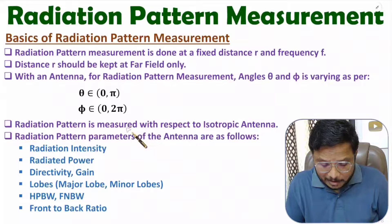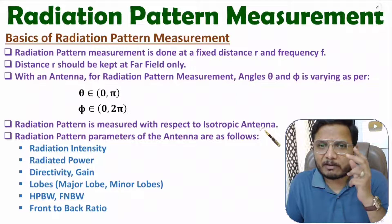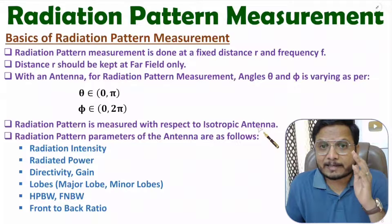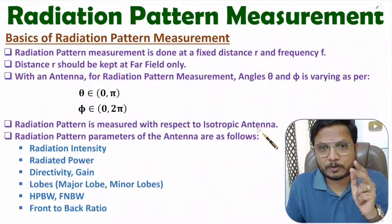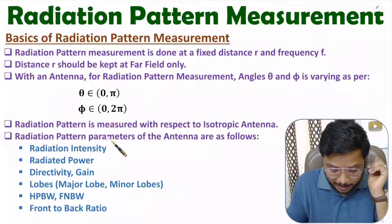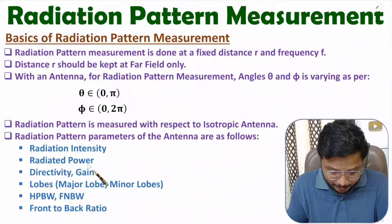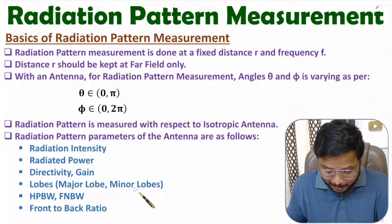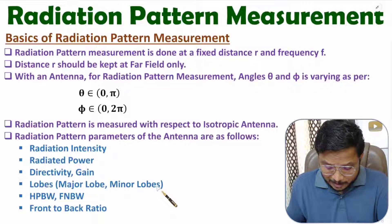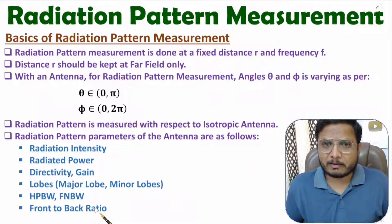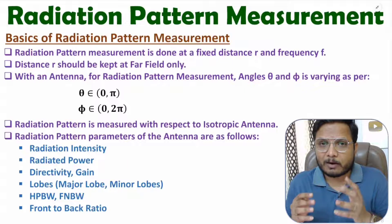Radiation pattern measurement is done with respect to an isotropic antenna. Whatever value we calculate for the radiation pattern is relative to an isotropic source, which radiates equally in all directions. From the radiation pattern, many parameters can be identified: radiation intensity, radiated power, directivity, gain, and the different lobes — the major lobe, side lobes, and back lobe. One can also identify half-power beamwidth, pencil beamwidth, and front-to-back ratio.